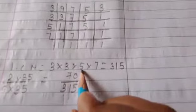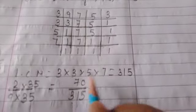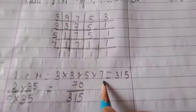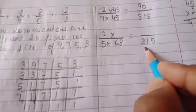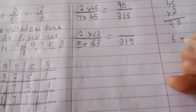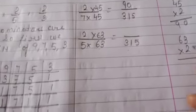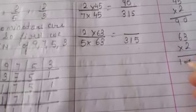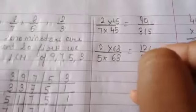Now next fraction is 2 upon 5. We want here denominator 315. Here 5 is there, so other numbers we will take: 3 times 3 is 9, 9 times 7 is 63. So with 5 we will multiply 63 — 5 times 63 is 315. In the numerator also we will multiply 63. 63 times 2: 2 times 3 is 6, 2 times 6 is 12. So 126.